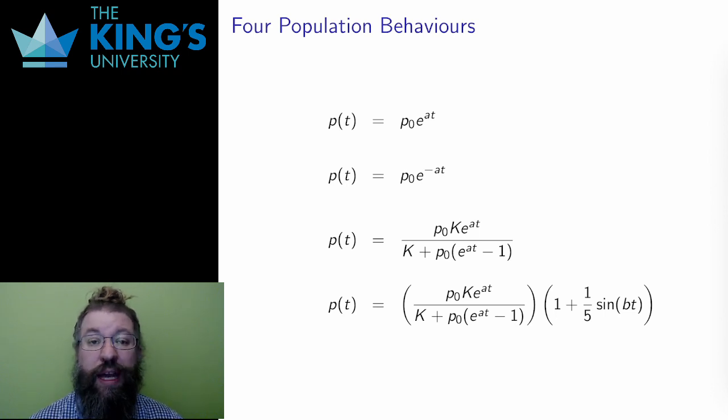In the first, I have exponential growth and no denominator at all. This is unbounded growth. The limit as t goes to infinity is just infinity. This measures a population that will just keep growing.